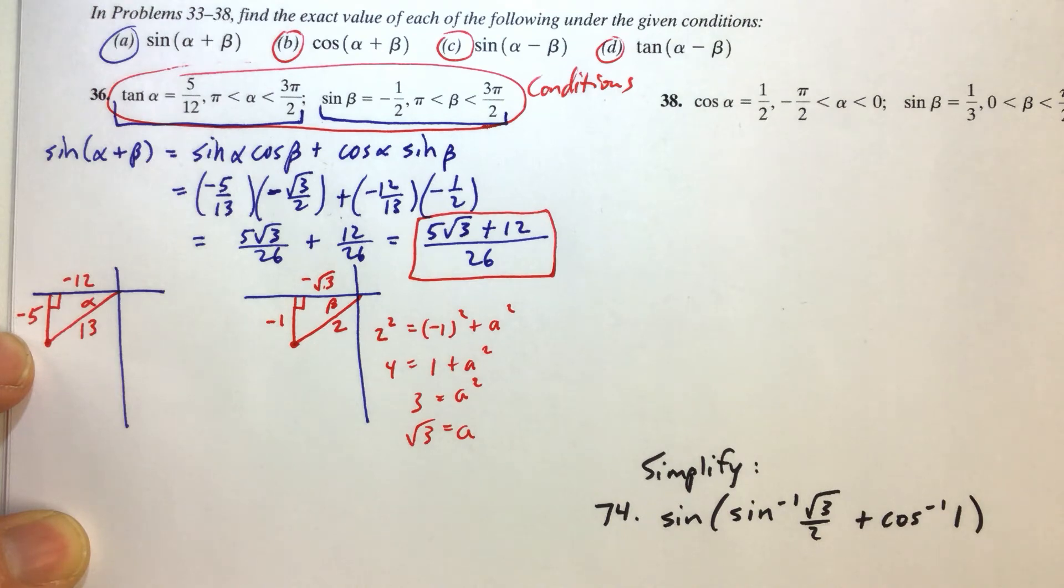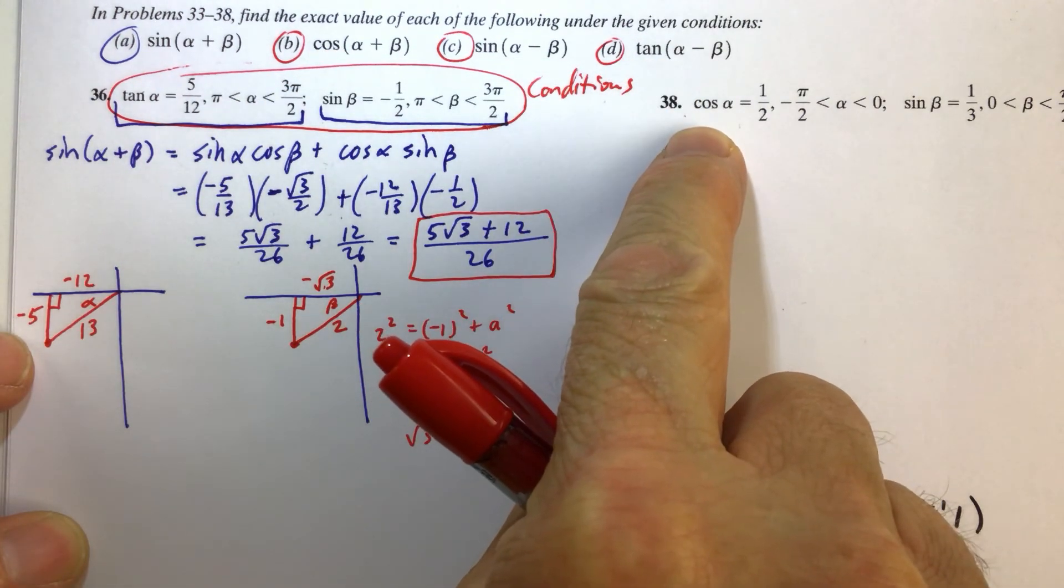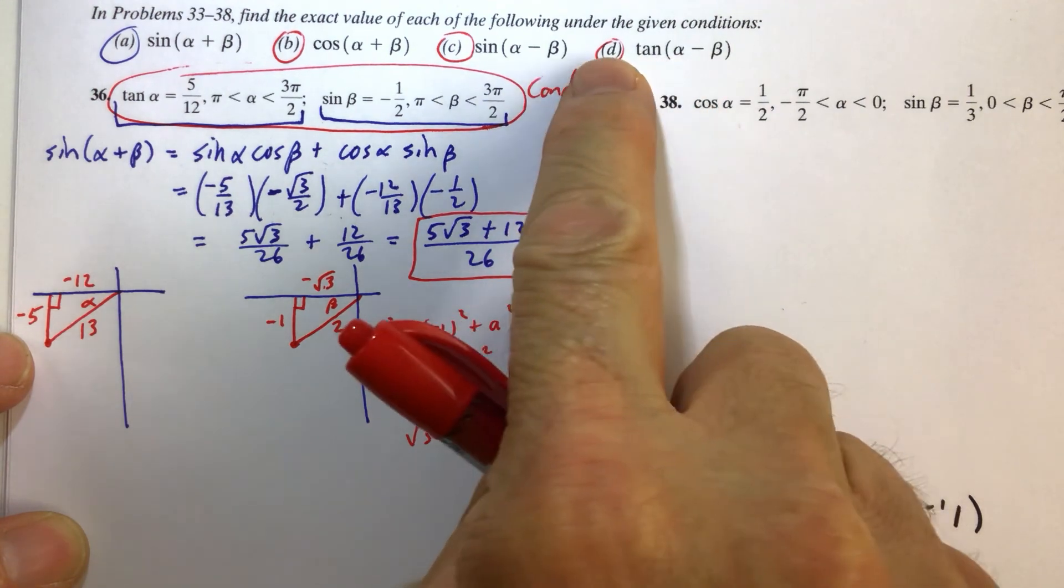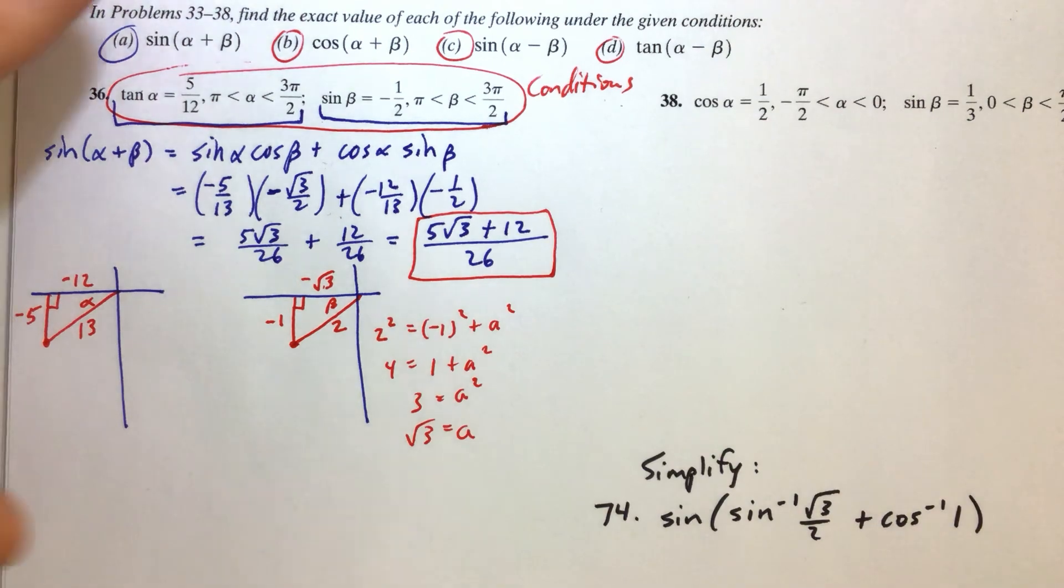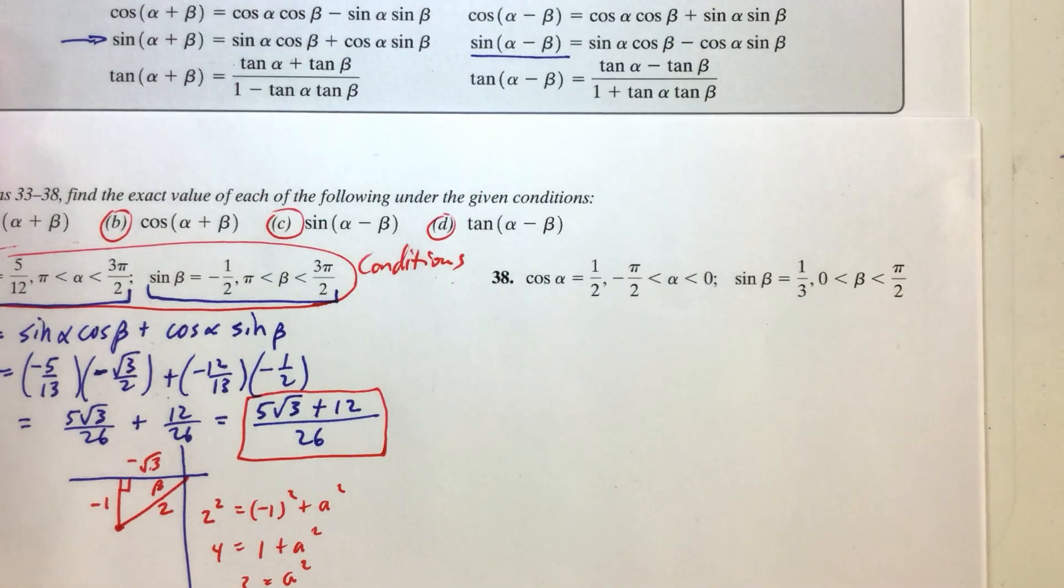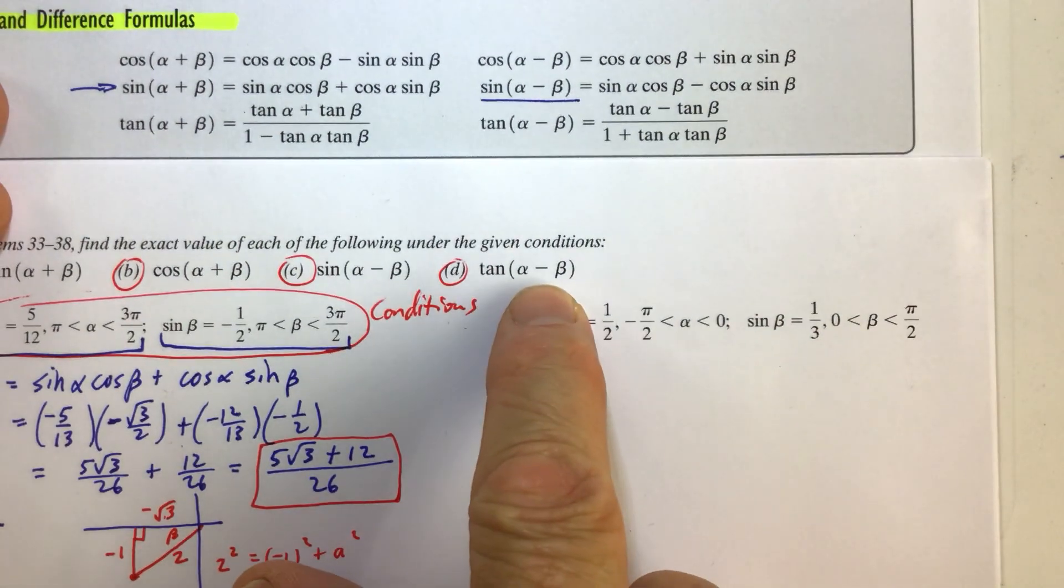So I am not going to do the rest of them, but you could. I will do D for number 38, so we can see how it works when we evaluate or find the exact value of a tangent addition or, in this case, subtraction formula.